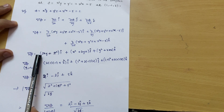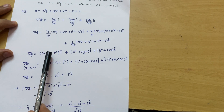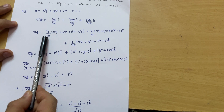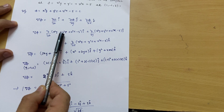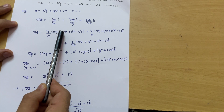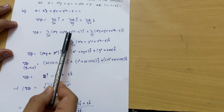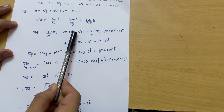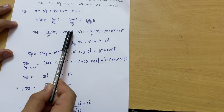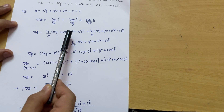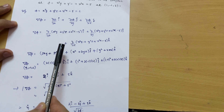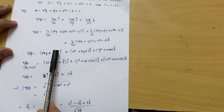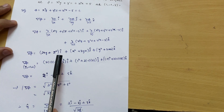Differentiating with respect to x: the derivative of x²y is 2xy. For y²z, there is no x term so it gives 0. For z²x, the derivative of x is 1, so z² remains as z². Therefore the x-component is (2xy + z²) î.